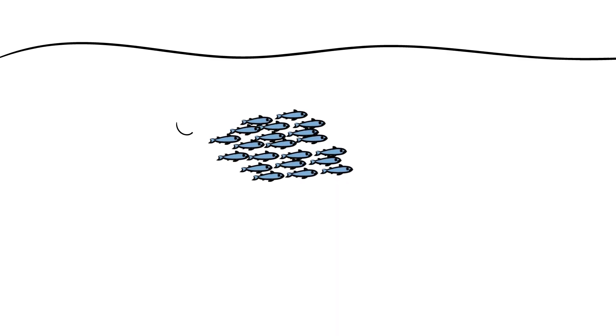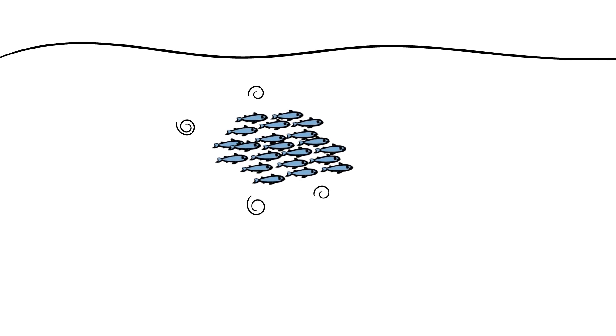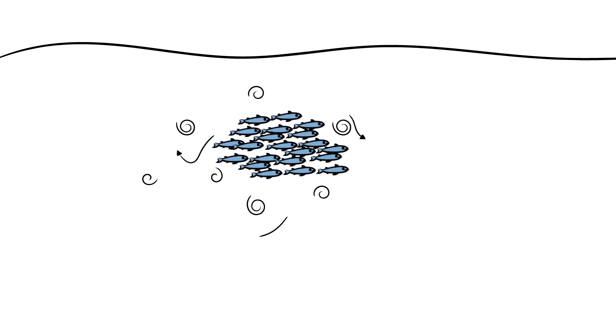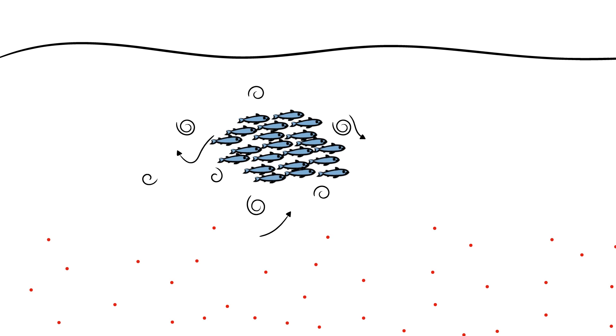Thus far, few researchers have been able to demonstrate that fish can generate sizeable ocean turbulence. And those that had succeeded at doing so suggested that bioturbulence produces very little mixing.